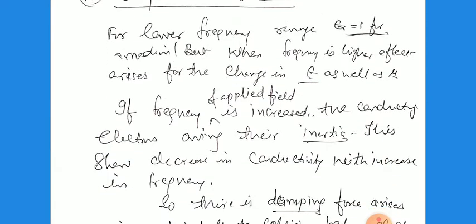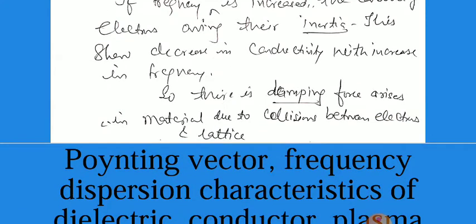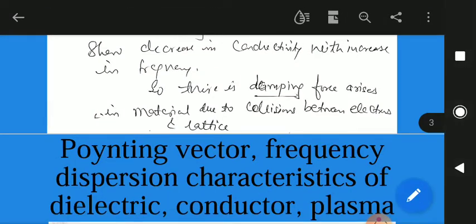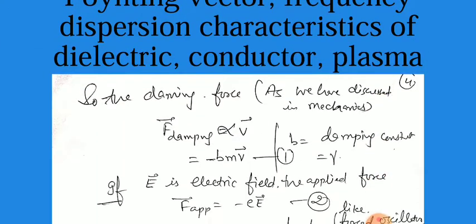If the frequency of the applied field is increased, then the conducting electrons, having their inertia, show a decrease in conductivity with the increase in frequency. Because on increasing the frequency, conductivity decreases, because the number of collisions increases, hence damping occurs. So a damping force arises in the material due to collisions between electrons and the lattice — if the frequency is high, then more collisions will occur. This damping is responsible for the change in the value of permittivity and permeability.